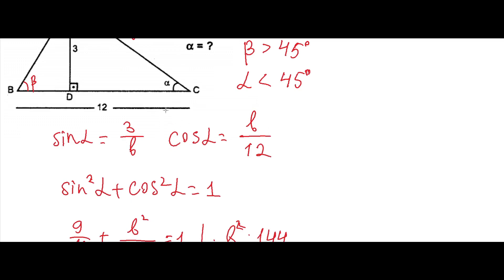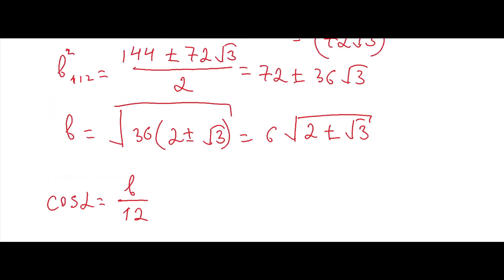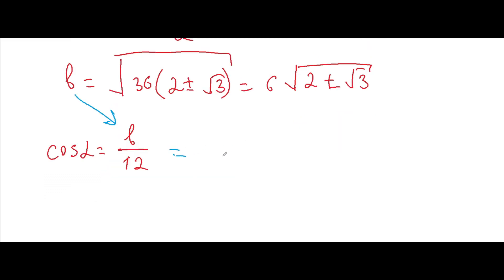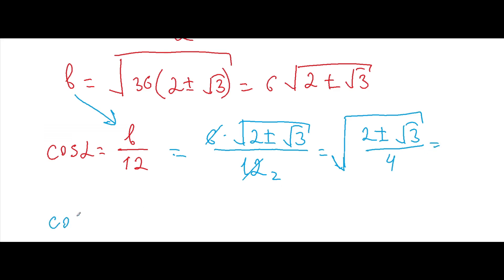Now we can plug this value of B into the expression for cosine alpha. Cosine alpha equals 6 times the square root of (2 plus or minus square root of 3) over 12, and we can cancel to get the square root of (2 plus or minus square root of 3) over 4, all under a square root.